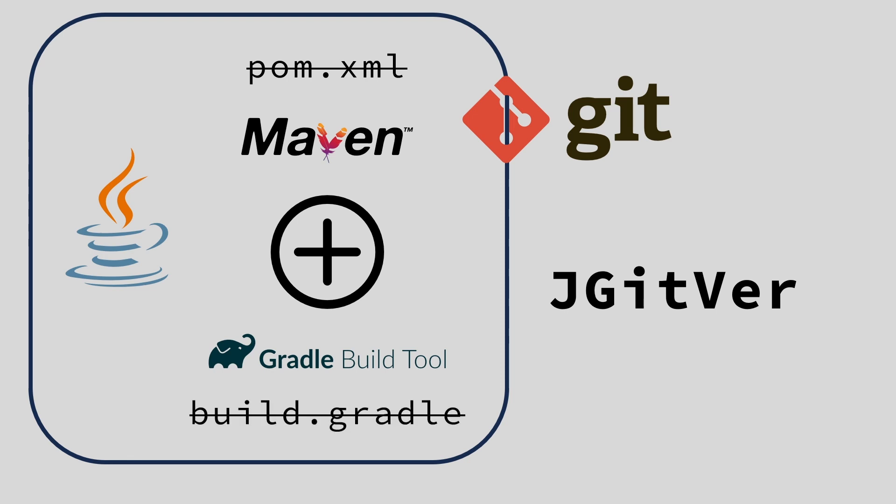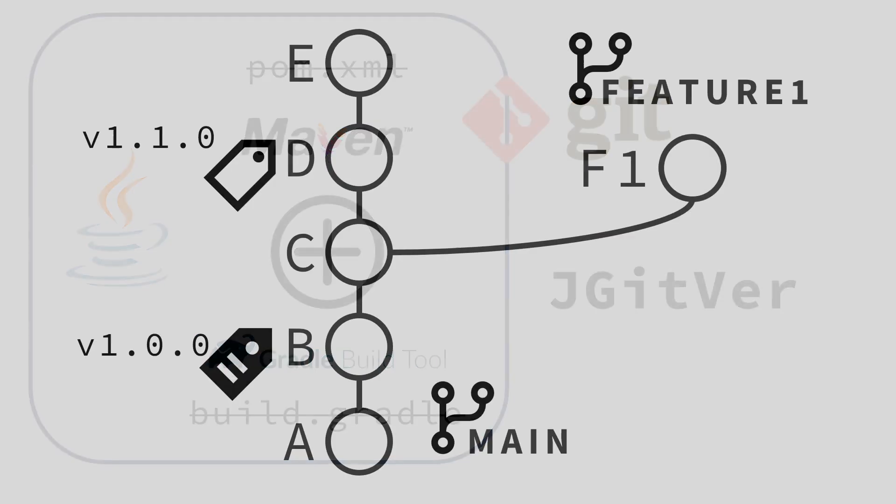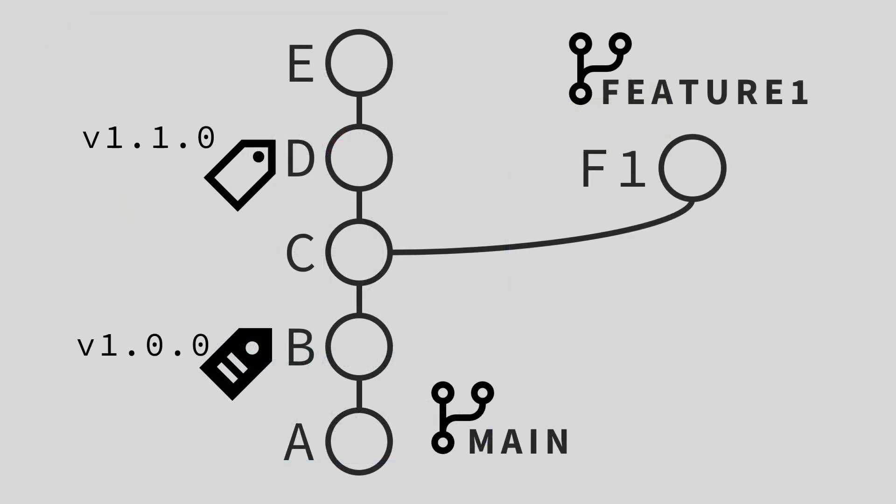Instead of modifying the version of your project in your POM XML or build Gradle files, JGitware will look at the Git history of your project — tags, commits, and branches — and from there it will automatically compute the version of your project.